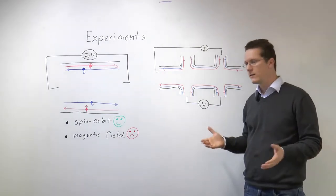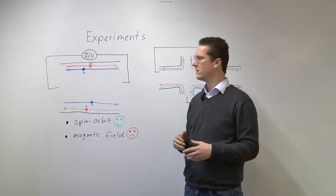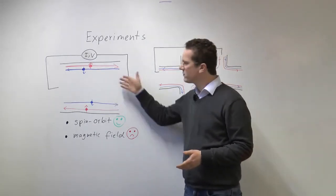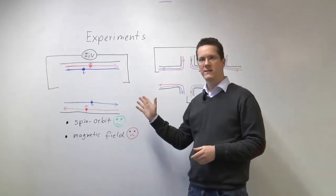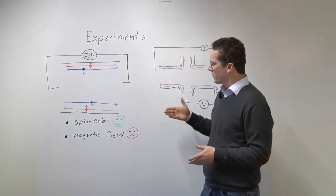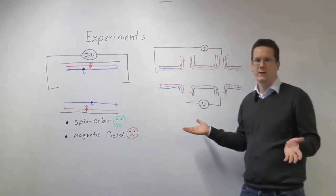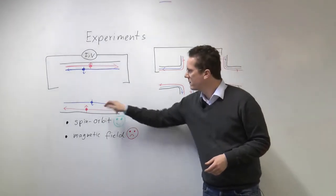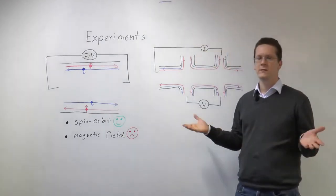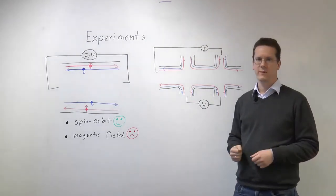Now a second way to probe the edge channels in a two-dimensional topological insulator is to try to destroy this topological insulator phase, to try to make these edge channels reflect. Now spin-orbit for example, we already know that doesn't do the trick because spin-orbit does not break time-reversal symmetry and since these are protected by time-reversal symmetry there is no backscattering. So what we really need to do is we need to break time-reversal symmetry. The easiest way to do that is with a magnetic field.